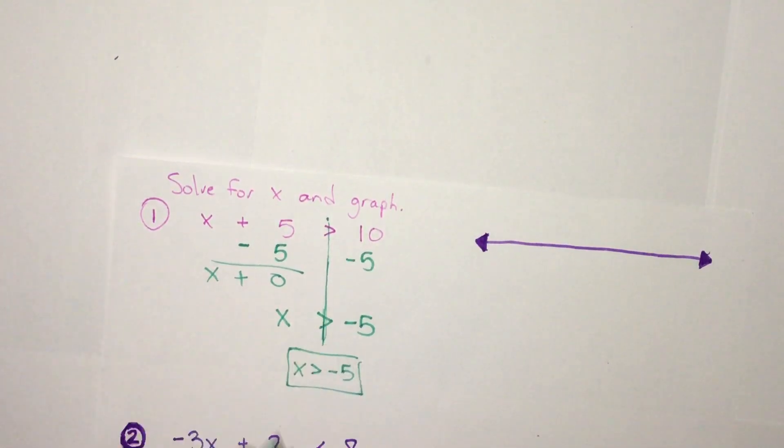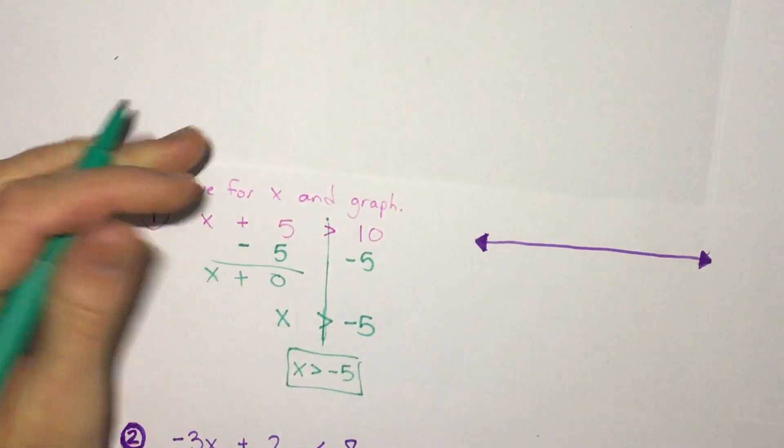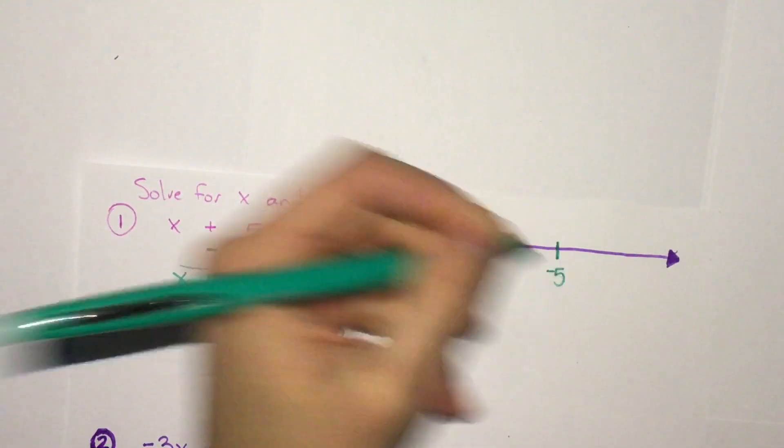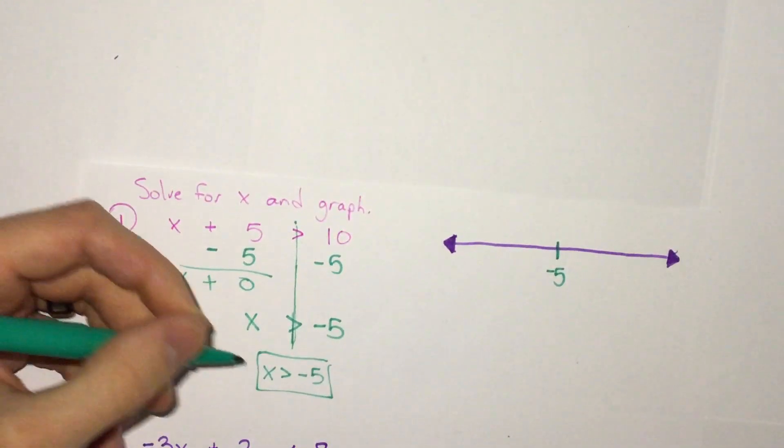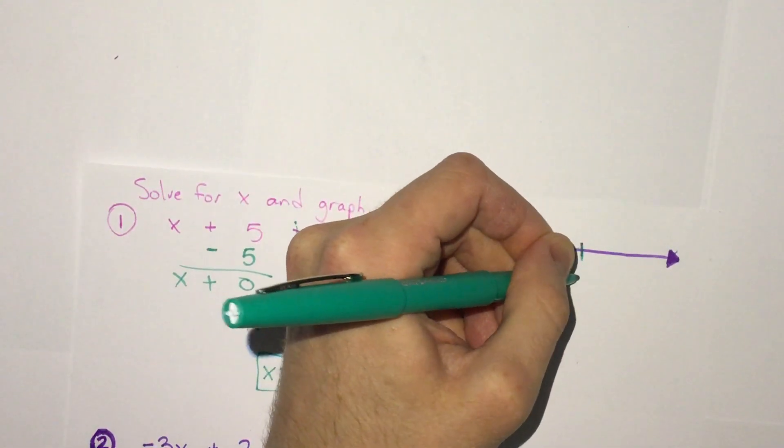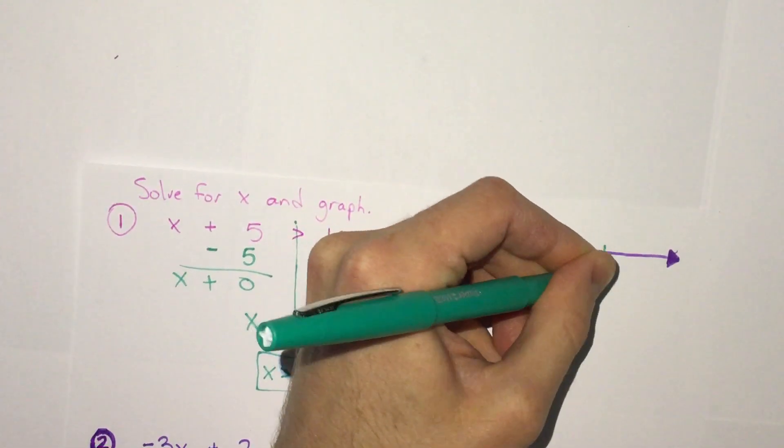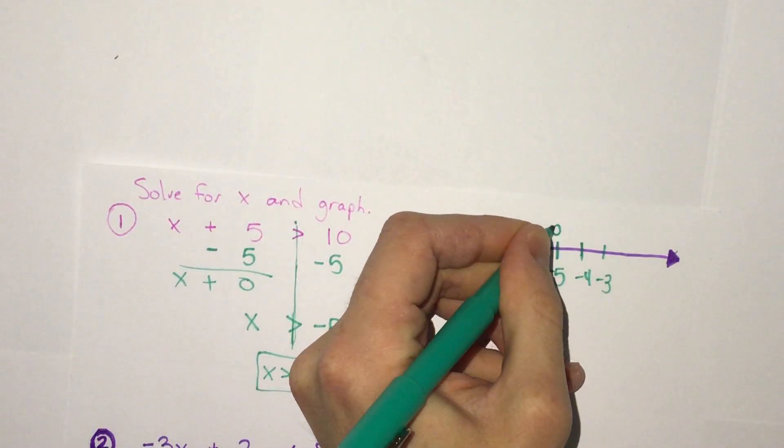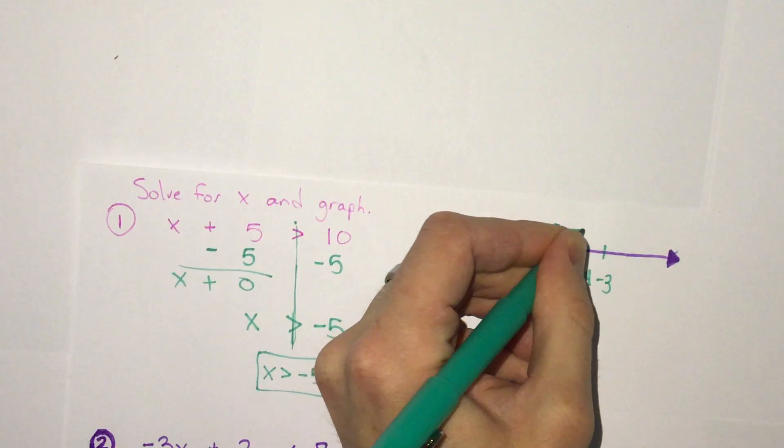We go to our number line and put negative 5 here. If we're saying x is greater than negative 5, then we're going right to numbers bigger. It's not equal to negative 5, so we put an open circle at negative 5 and put an arrow going right. That's our answer.